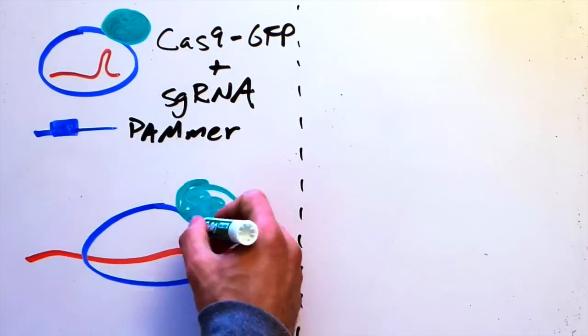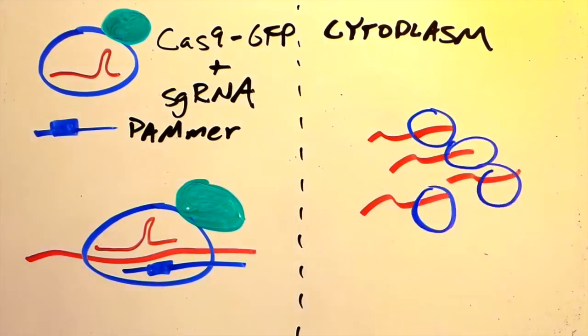We adapted this approach to target RNA in living cells using Cas9 fused to a fluorescent protein, like GFP. Using this approach, we were able to track the localization of RNAs in the cytoplasm of living cells.